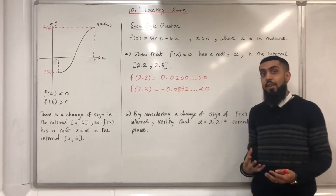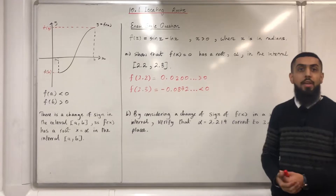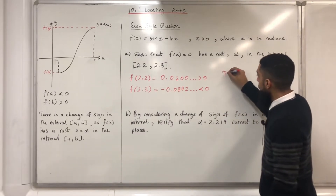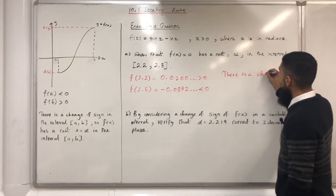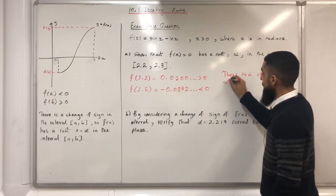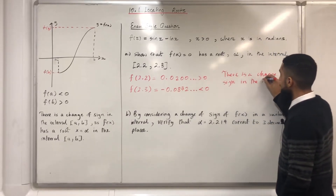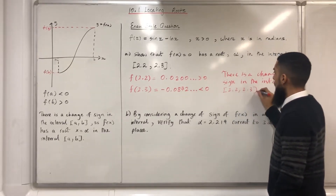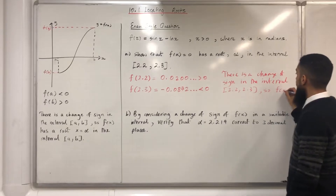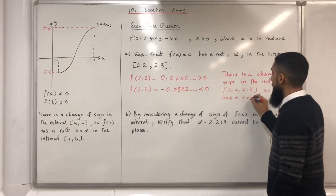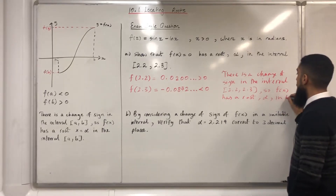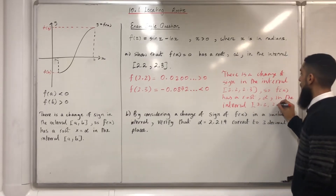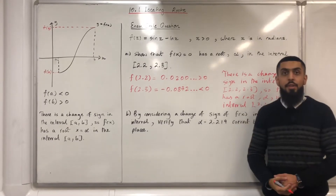That's the end of the first step. The second step is to write down a conclusion: there is a change of sign in the interval 2.2 to 2.3, so f(x) has a root α in the interval 2.2 to 2.3. That completes part A.